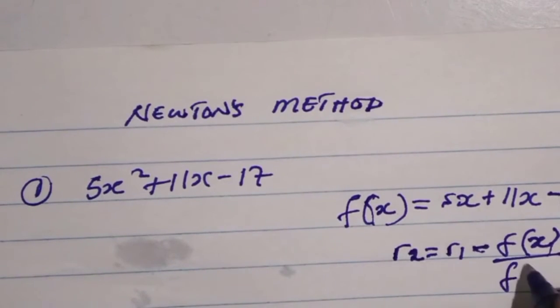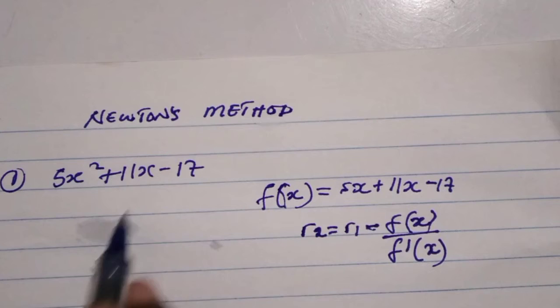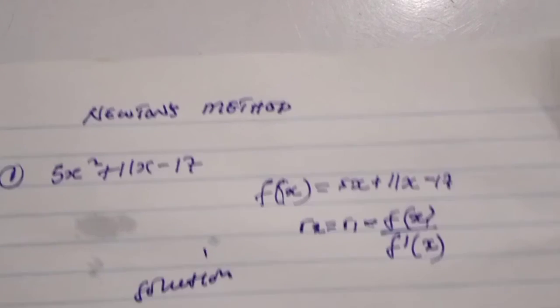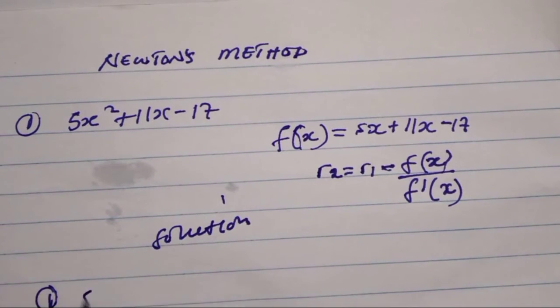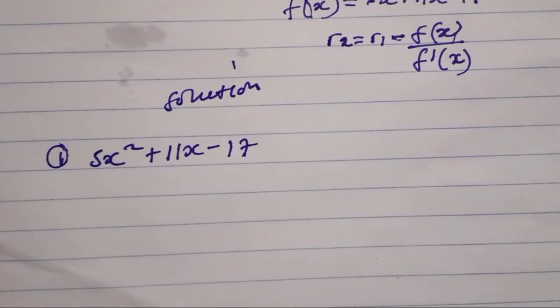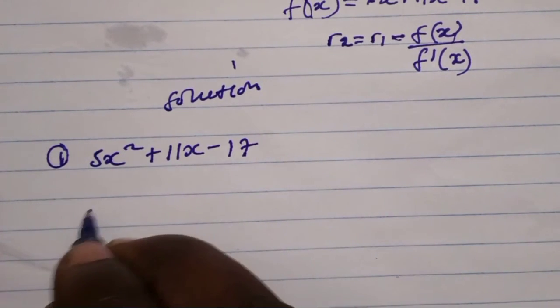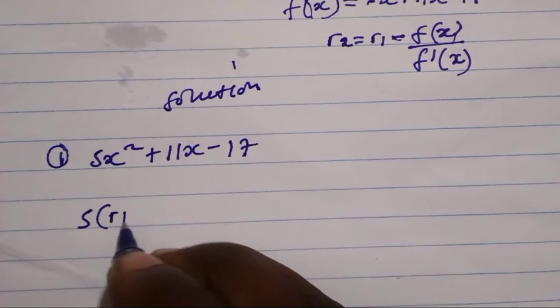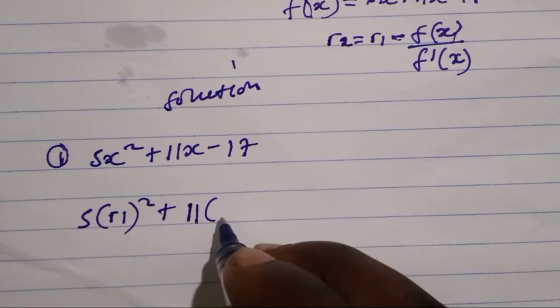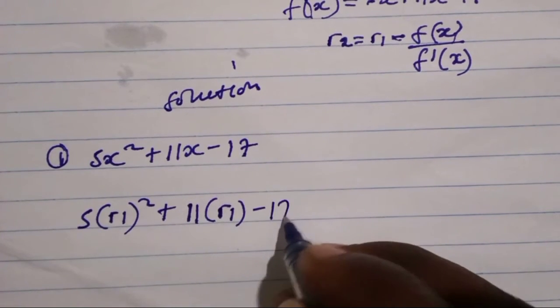Now let's try to work out this equation which we have here: 5x² + 11x - 17. Let's try to approximate that: 5 open brackets r1 squared plus 11 open brackets r1 minus 17.